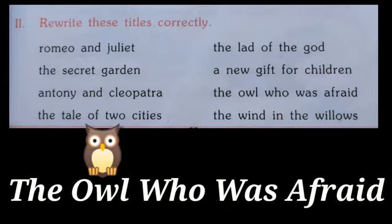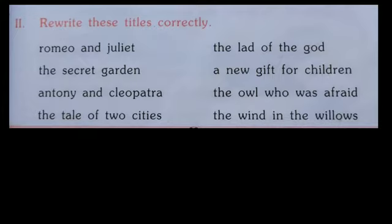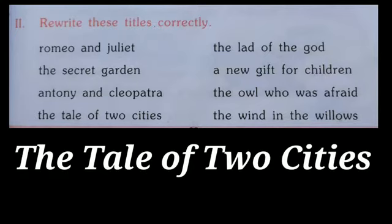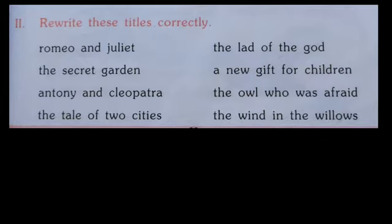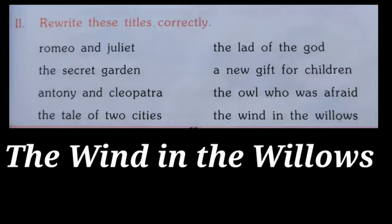In 'The Owl Who Was Afraid', each word begins with a capital letter. The book 'The Tale of Two Cities' written by Charles Dickens will have T in 'The', T in 'Tale', and T in 'Two' along with C in 'Cities' in capitals.